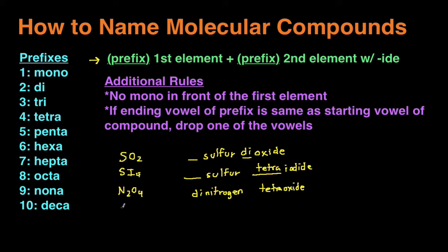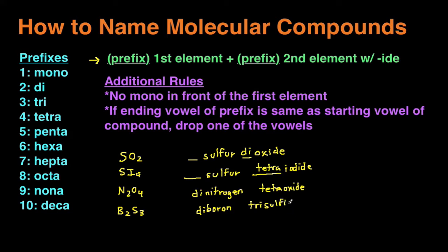Let's do two more examples. Next is B2S3. The first element, B, is boron. We have two of them, so we look at the prefix for two, which is 'di' — giving us 'diboron.' The second element is sulfur, but again we add '-ide' to the root, so instead of 'sulfur' it becomes 'sulfide.' We have three of those, so we write 'tri' in front. The name for B2S3 is diboron trisulfide.